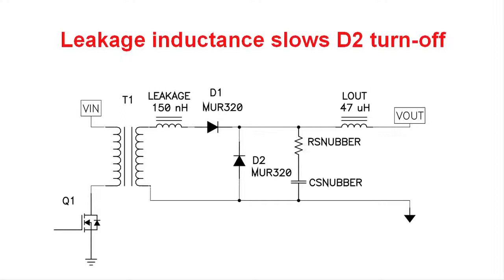This is a simplified schematic of a forward converter. Over here on the left, we have input voltage applied to the circuit, and it's applied to the transformer. The transformer is switched by a transistor in the primary. In the secondary, we're showing an inductance in series with the transformer, and that's really a parasitic inductance — it's a leakage inductance of the transformer, and there may be some trace inductances also that you could lump in with this leakage inductance. The output of the transformer is rectified with D1 and D2, and applied to an output filter shown as L-out, but it could be a lot more complicated than what I've shown.